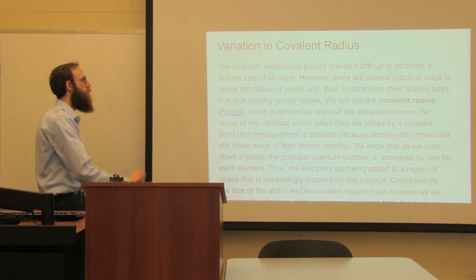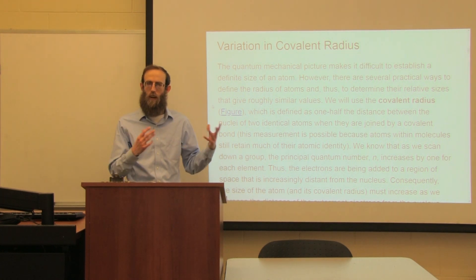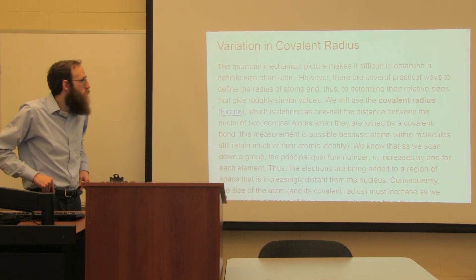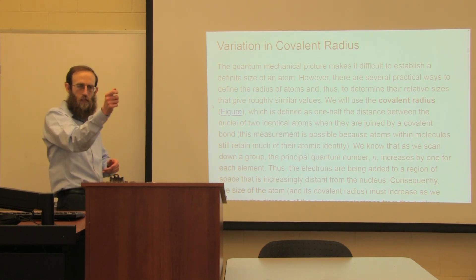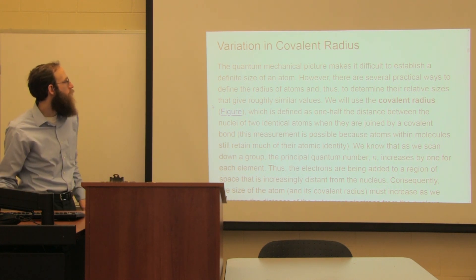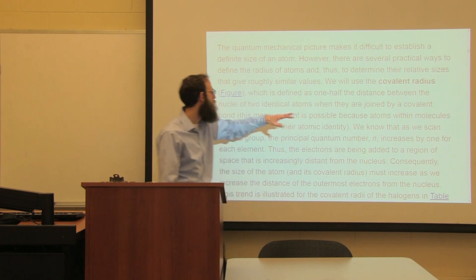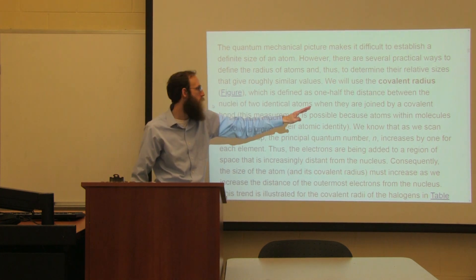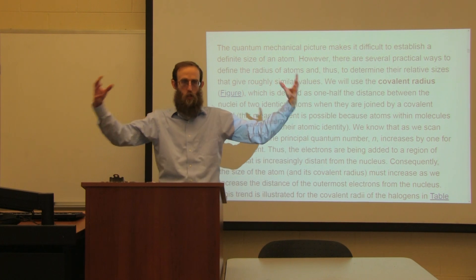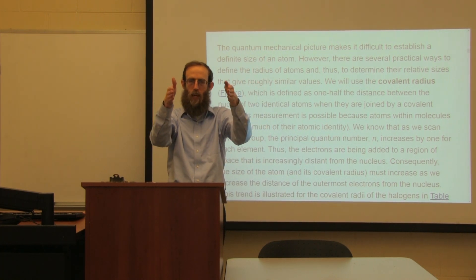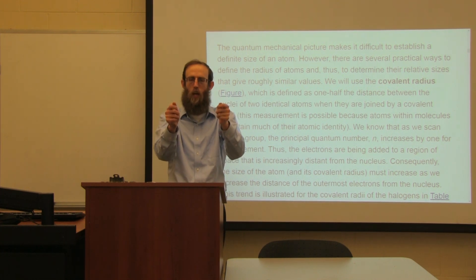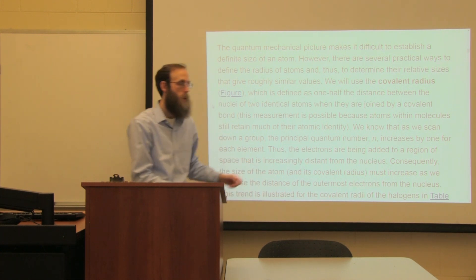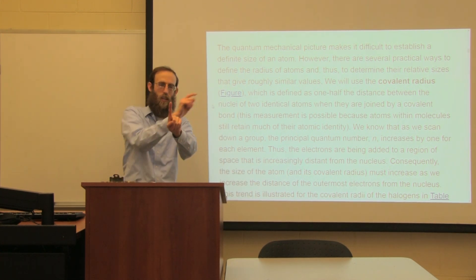For variations in the covalent radius, we're talking about the differences in size for things in a covalent bond. We're going to use this covalent radius, defined as one half the distance between the nuclei of two identical atoms when they're joined by a covalent bond. Since a covalent bond involves equal sharing and the two atoms are the same, they share equally - so half the distance between the two nuclei is the radius from one nucleus to the outside.